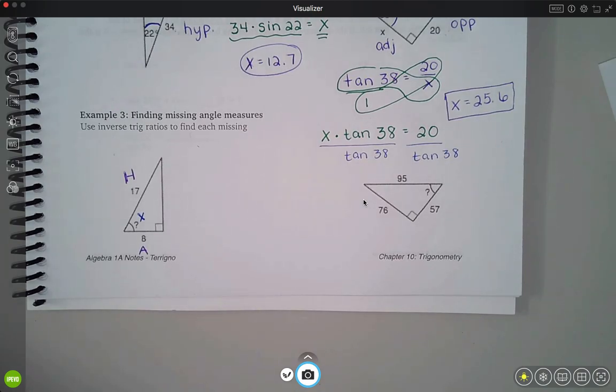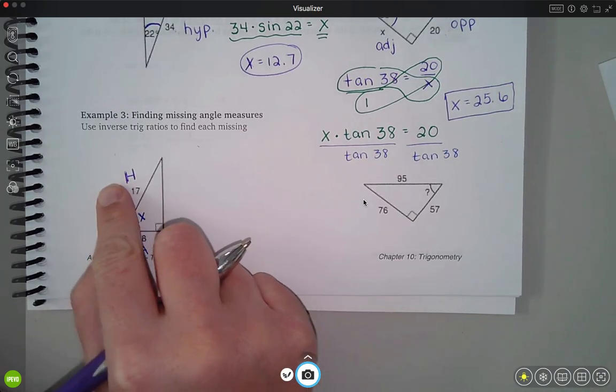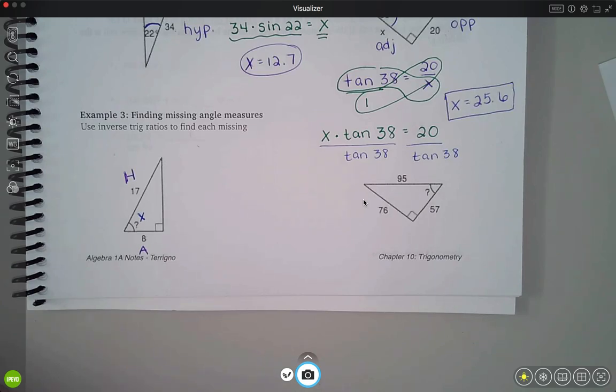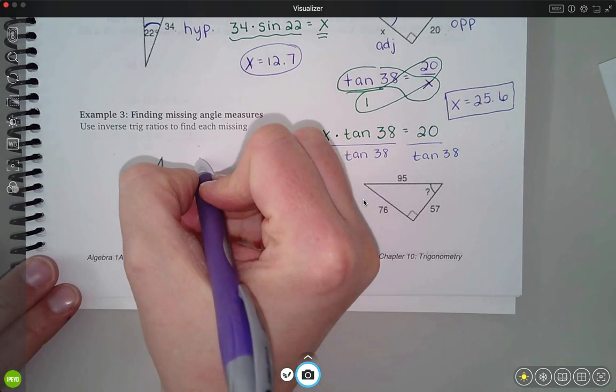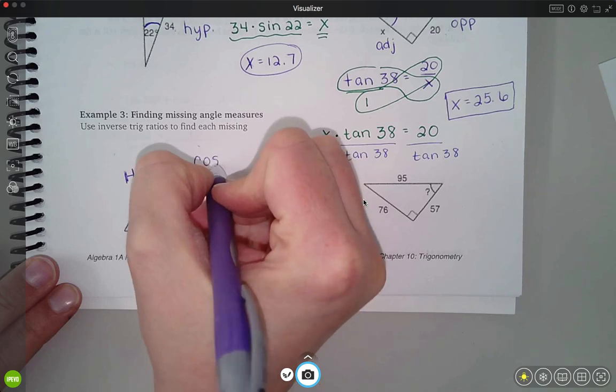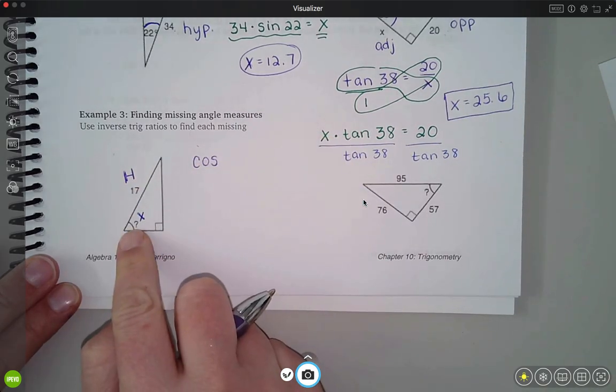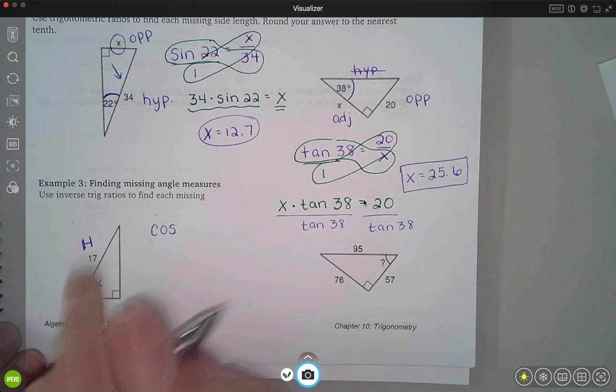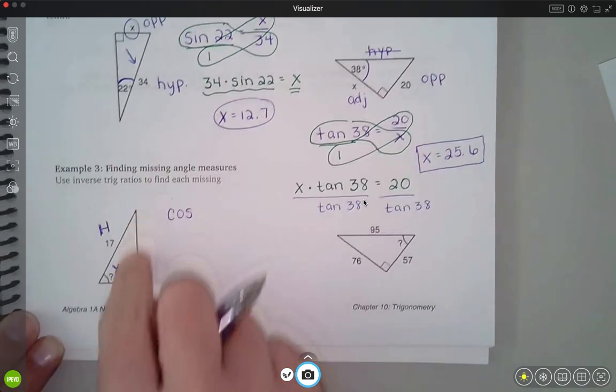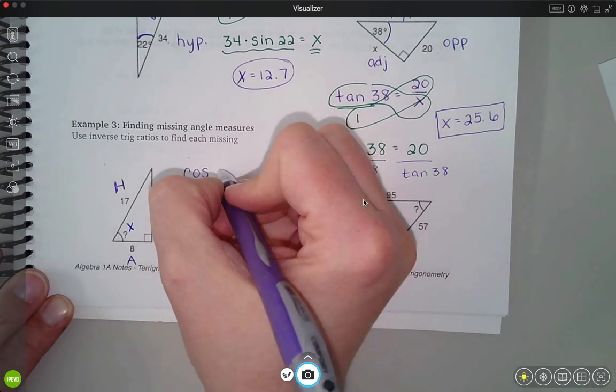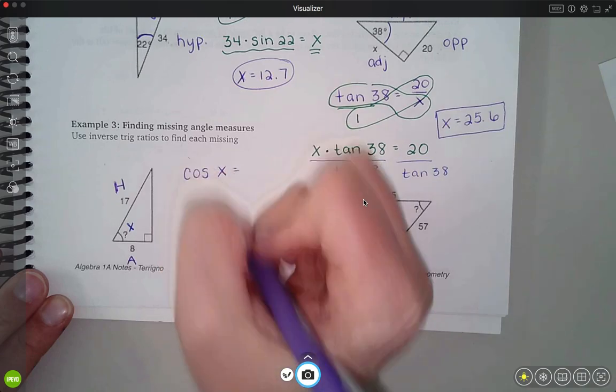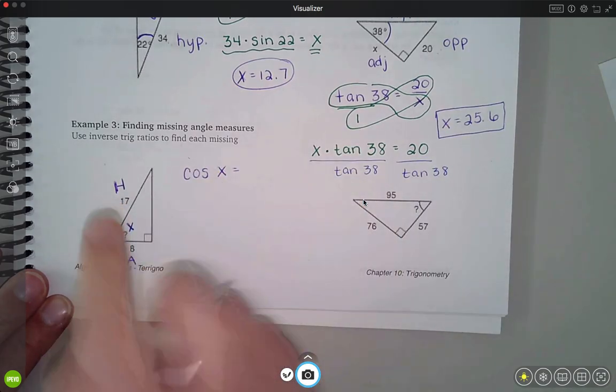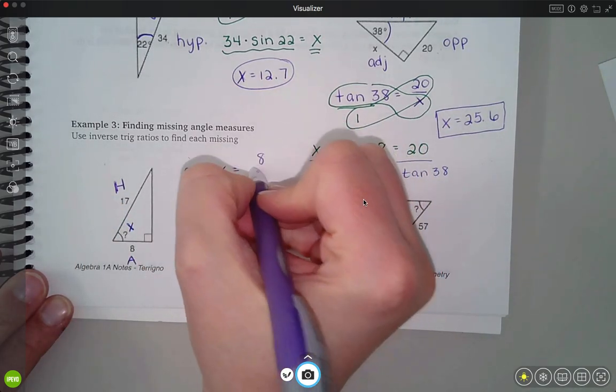And so this time I'm using a and h, which if you look up at SOHCAHTOA would be cosine. When I set this ratio up, it's cosine, but this time I don't know what the angle is. Up here I knew that my angle was 22, so I was able to put that in. I don't know the angle here, so I'm just going to put cosine x equals adjacent over hypotenuse, so that's 8 over 17.